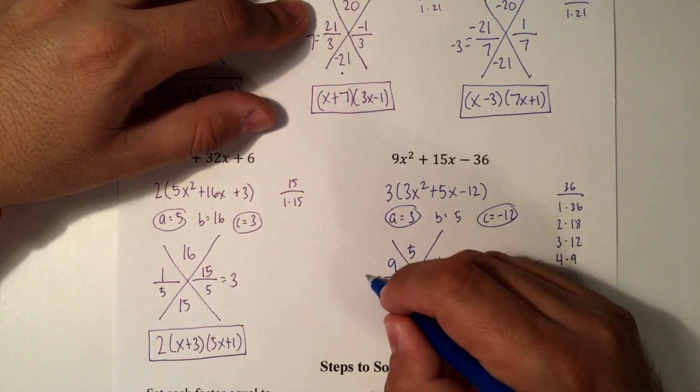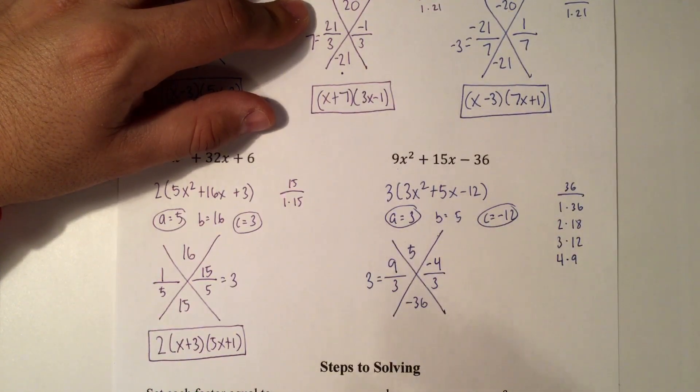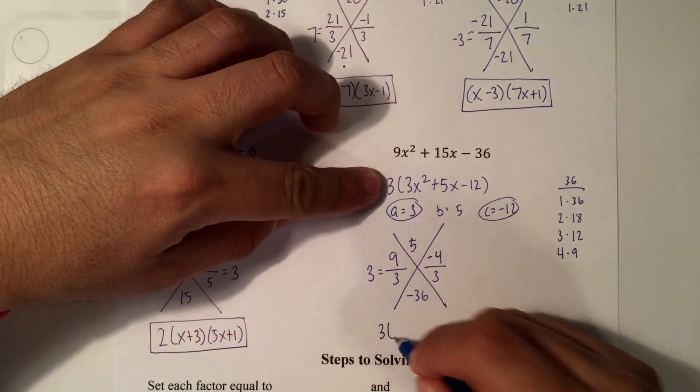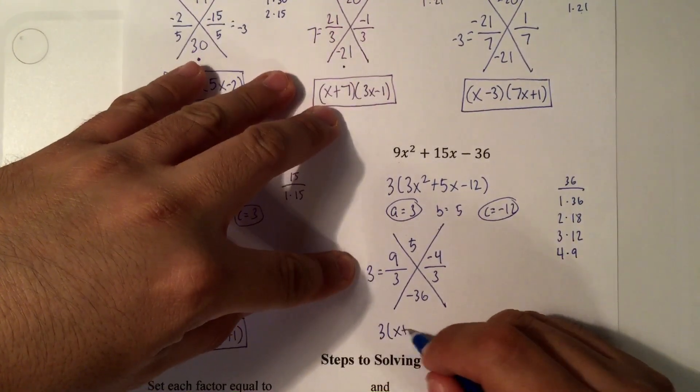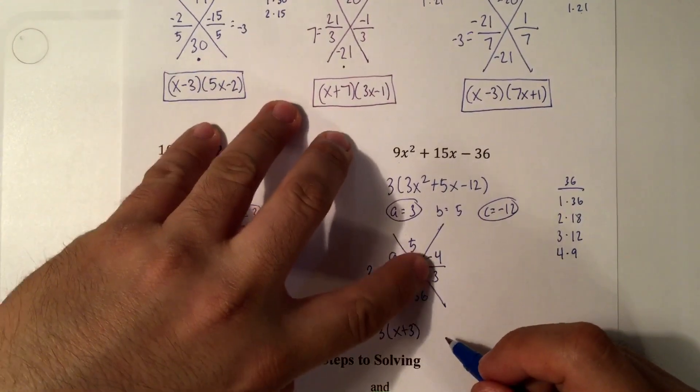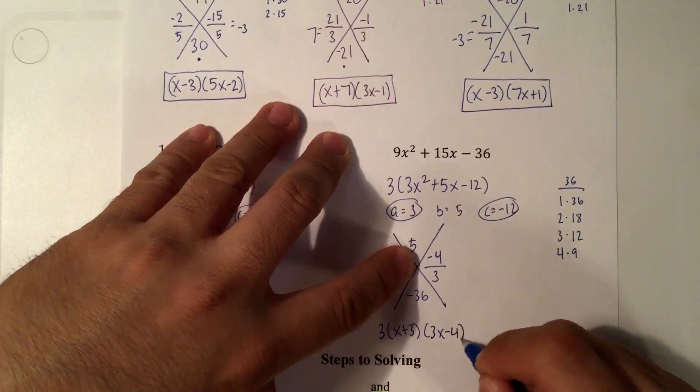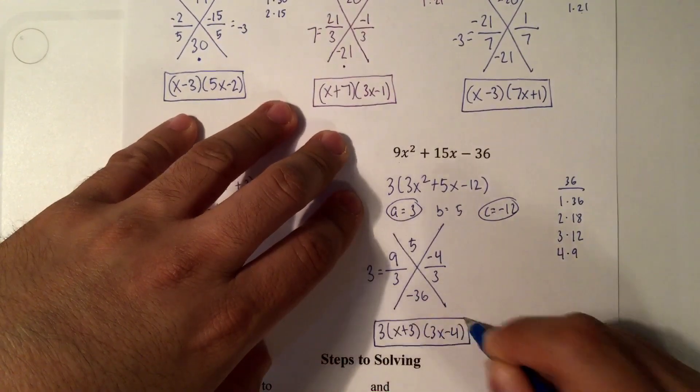9 minus 4 is 5. 9 times negative 4 is negative 36. 9 divided by 3 is 3. Negative 4 thirds does not reduce. Last, we're going to say, don't forget your GCF. So 3 parentheses. That's a positive 3. So x plus 3. And then 3 does not go into negative 4 evenly or reduce. So 3x minus 4.